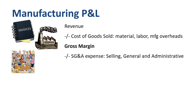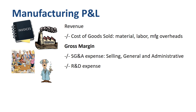SG&A is selling, general, and administrative expenses — basically the cost of the general manager, salespeople, marketing team, customer service, human resources, finance, legal, and IT. Research and development gets reported as a separate line item. Gross Margin minus SG&A and R&D is Operating Margin, or EBIT.